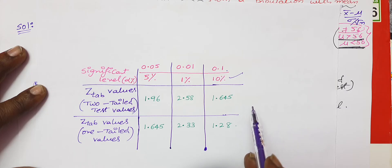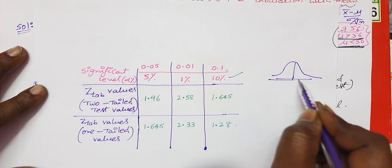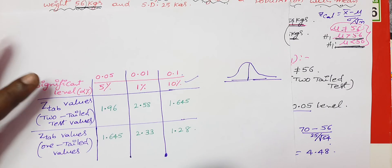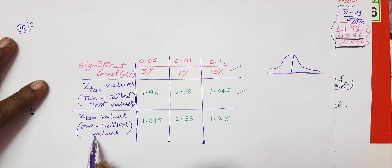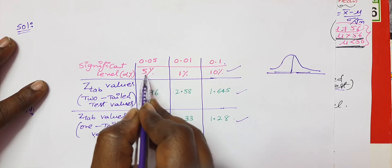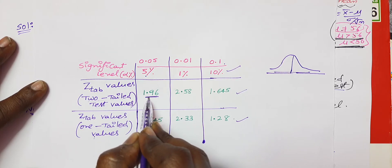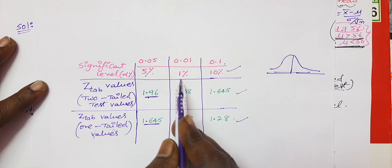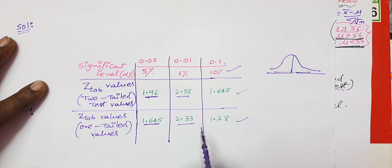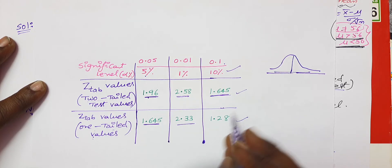From the Z distribution table: for a 2-tailed test at 5% significance level, the table value is 1.96. For a 1-tailed test, it is 1.645. For 1% significance level, 2-tailed is 2.58 and 1-tailed is 2.33. For 10% significance level, 2-tailed is 1.645 and 1-tailed is 1.28. Here we use the 2-tailed value of 1.96.